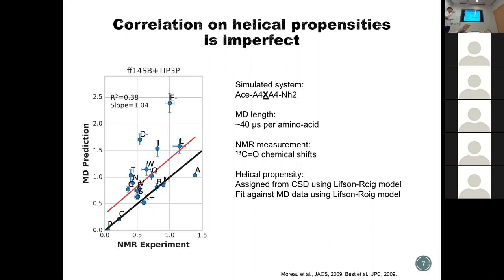For example, if you have a mutation in a drug binding pocket that causes drug resistance, and you want to study it — if you mutate phenylalanine to alanine, the NMR shows helical propensity increases, but according to the simulation it decreases. That's just one example. If you look at the correlation, it means we might make more mistakes in other systems.